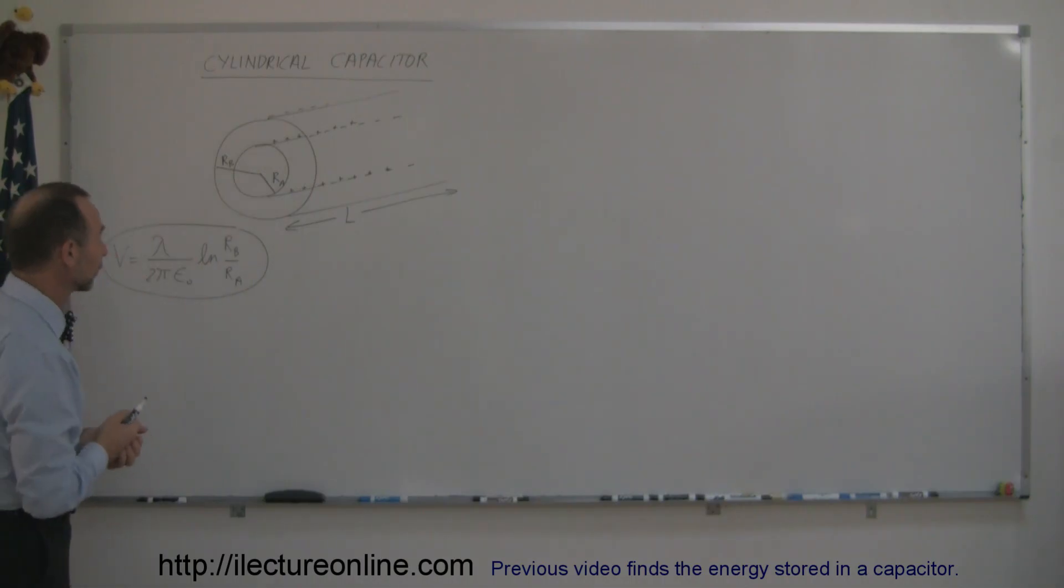This was something that we did in an earlier chapter. And the radius b would be the radius to the outer cylinder, radius a would be the radius to the inner cylinder, and you can see then that the natural log of a larger number divided by a smaller number is a positive value, which would indicate that the potential v would be a positive value.